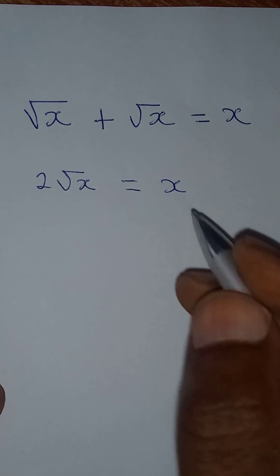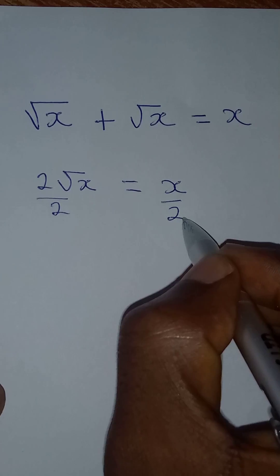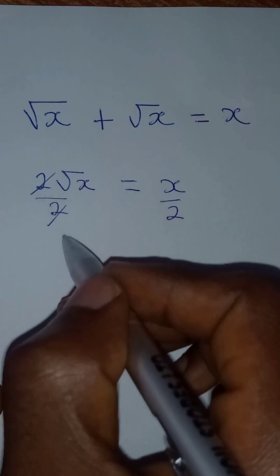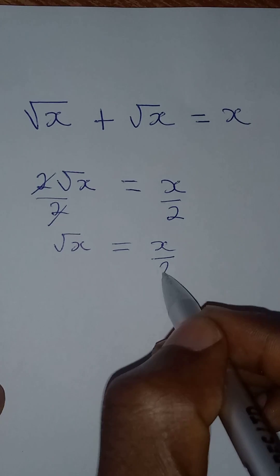And the first thing I will do is to divide both sides by two. So that square root of x will cancel this, and square root of x is equal to x over two.